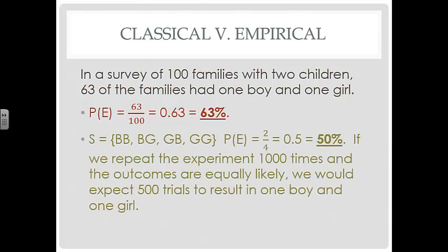Okay, so the number of ways that you can get 1 boy and 1 girl would be 2. Because if we look at the sample space, you could have a boy and a boy. Then you could have a boy and then a girl. Then you could have a girl and then a boy. Or you could have a girl and a girl. So 2 out of the total 4 gives you 50%. So if we repeat the experiment 1,000 times and the outcomes are equally likely, expecting a boy or a girl, we would expect 500 trials to result in 1 boy and 1 girl.